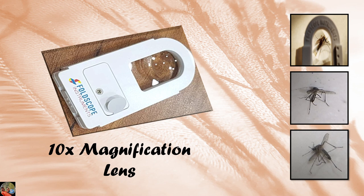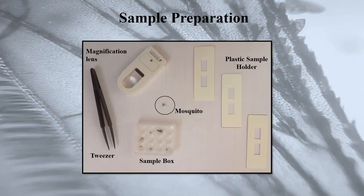To see the macroscopic view of the mosquito, I used a 10x magnification lens and collected three different kinds of mosquitoes shown in macroscopic view. For sample preparation, I used tweezers, a magnification lens, a sample box where different collected mosquitoes are kept — whether they come in the morning or night section, the mosquitoes differ. Three plastic sample slides are used to place each mosquito for macroscopic viewing.